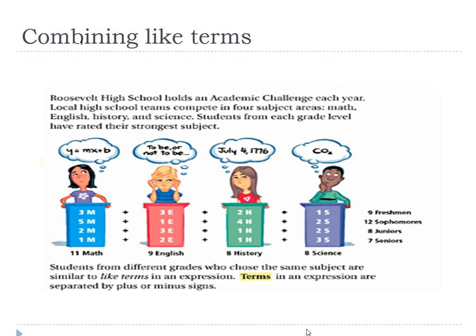We're going to apply the word 'term' to a word problem. Roosevelt High School holds an academic challenge each year. Local high school teams compete in four subject areas: math, English, history, and science. Students from each grade level rated their strongest subjects. The blue podium got 11 math, red got 9 English, green got 8 history, and purple got 8 science — so math is the winner. Students from different grades who chose the same subject are similar to like terms in expressions. For example, 3 math plus 5 math plus 2 math plus 1 math are like terms that add up to 11 math.